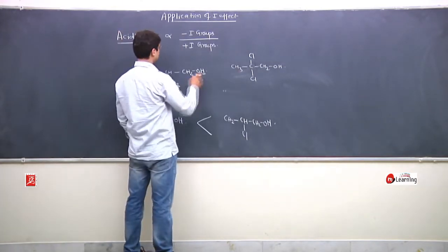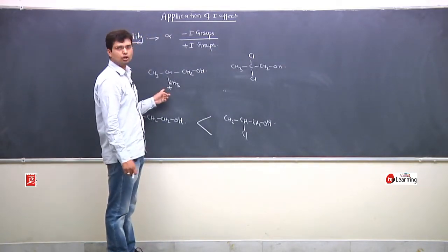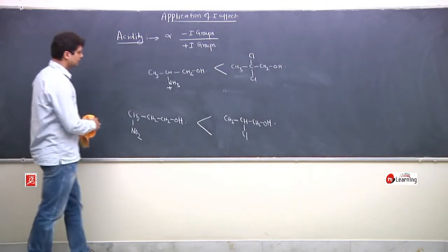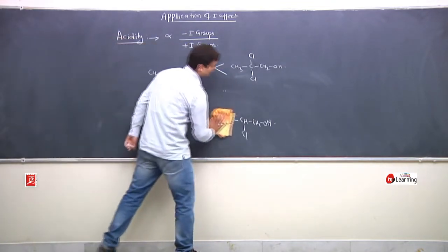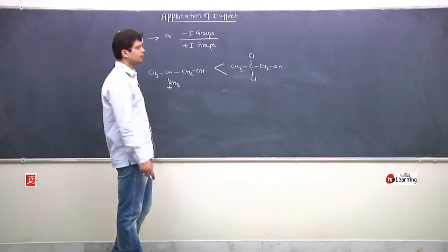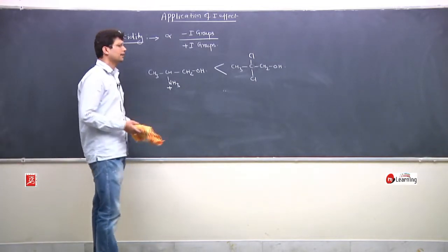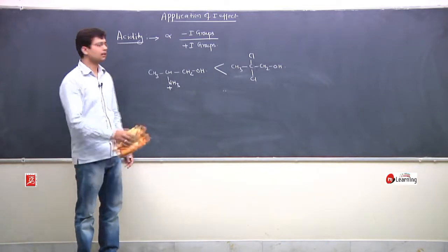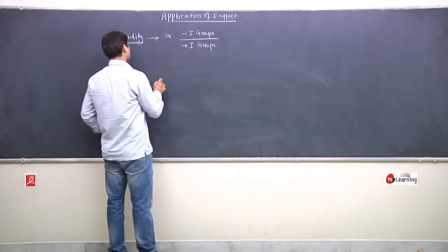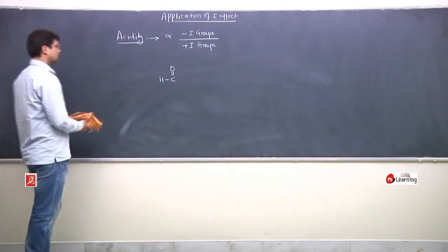Obviously this compound is more acidic than that one. Here F is a stronger minus-I group, but in the other compound there are two weaker minus-I groups. Since F is a strong minus-I group, this is more acidic when compared to the two-Cl compound. These are the same types of examples from yesterday, now applied in the acidity context.